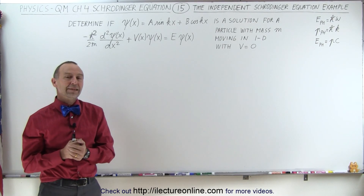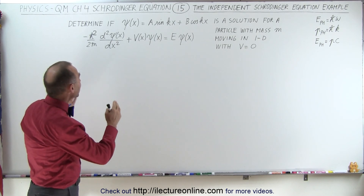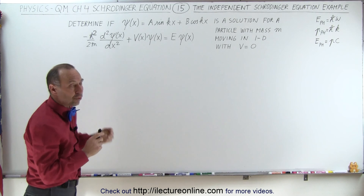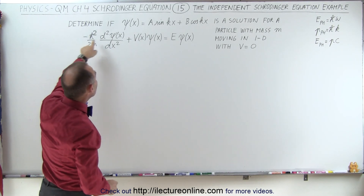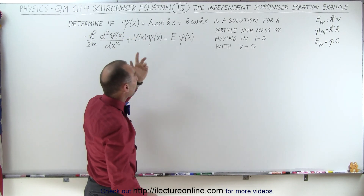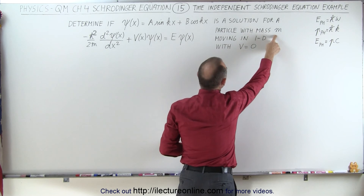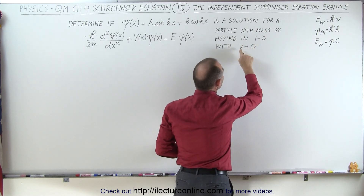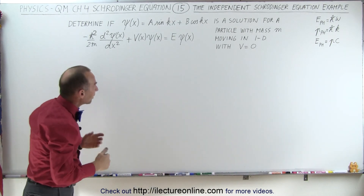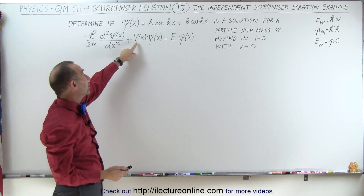Welcome to our lecture online. Now that we have the Schrödinger equation in the format of a time-independent equation, we're going to try an exercise where we're given a wave function that only depends on position — a wave function for a particle with mass m moving in a single dimension with potential energy equal to zero. That makes it easier because this term will go to zero since V is zero.